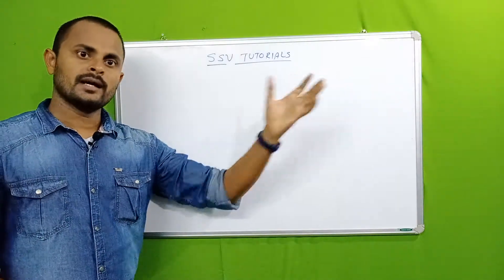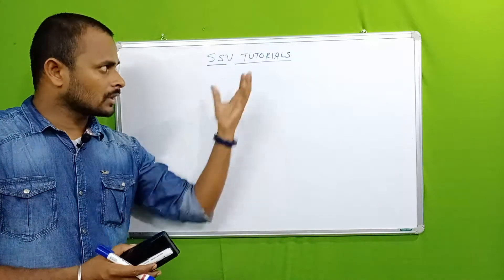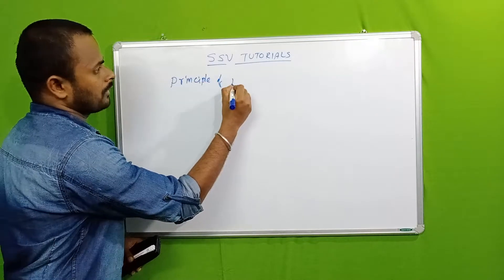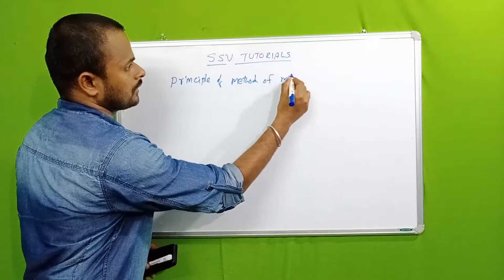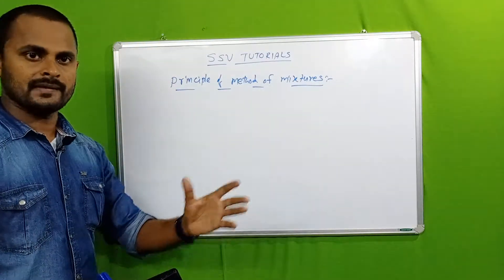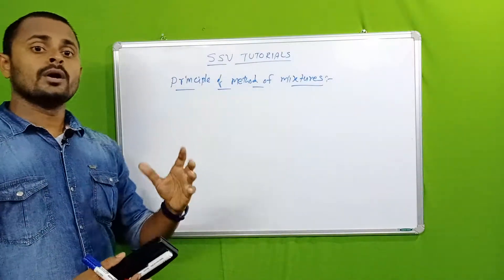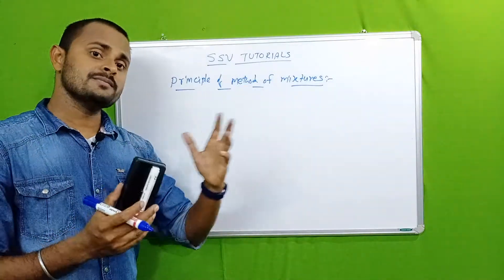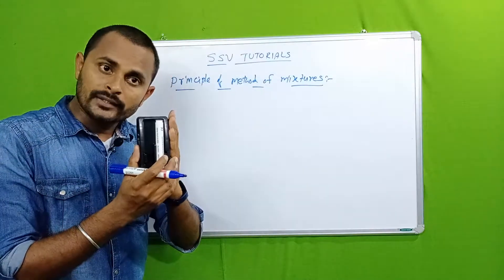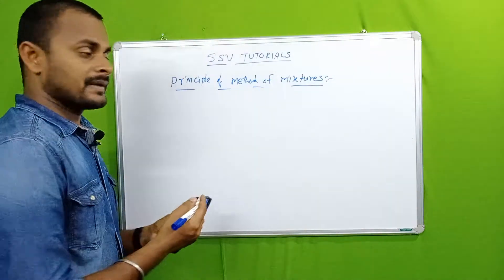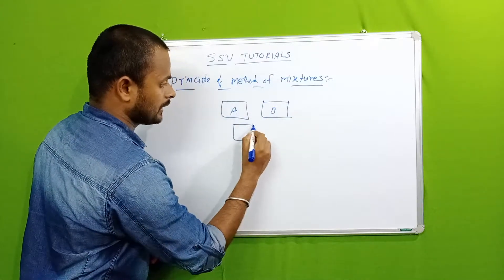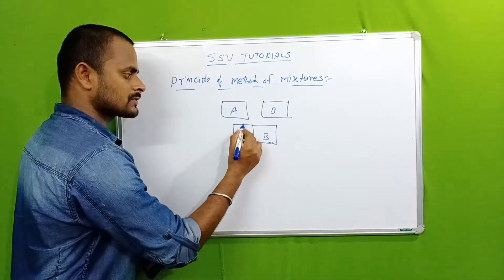Welcome to SSV Tutorials. We are completing different topics in heat, and today we discuss the principle of method of mixtures. Before discussing this topic, let's remember the concept of heat. Heat is a form of energy which transfers from a hotter body to a colder body. So in this principle, when you take object A and object B and both are in thermal contact, heat transfers from A to B.